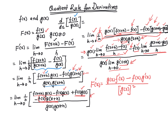Our derivative becomes: in the denominator g of x whole square, and in the numerator g of x times f prime of x — that is df over dx — minus f of x times g prime of x. That is the formula for the quotient rule. It is a little bit of calculation, but not too hard — it is rather easy if you just follow the steps. The derivative of the quotient of two functions is: g times the derivative of f minus f times the derivative of g, all divided by g of x whole square.